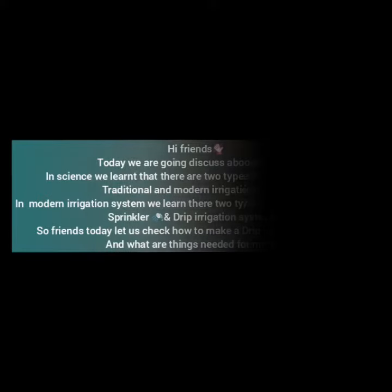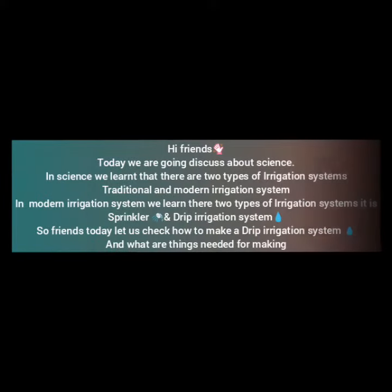Hi friends, today we are going to discuss about science. In science we have learned that there are two types of irrigation systems: traditional and modern. In the modern irrigation system, there are two types: sprinkler and drip irrigation system.